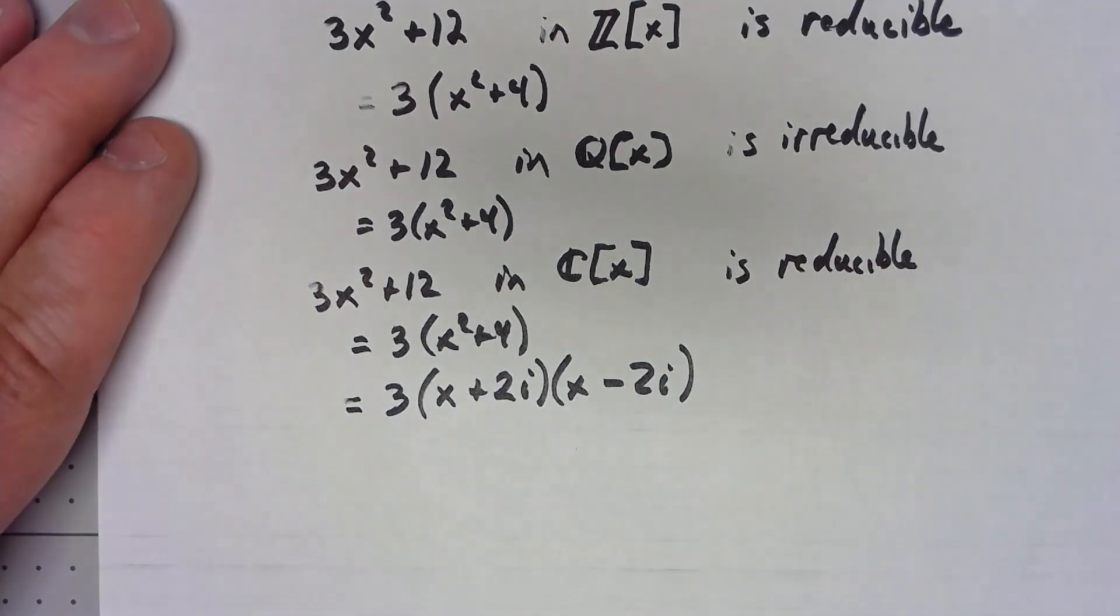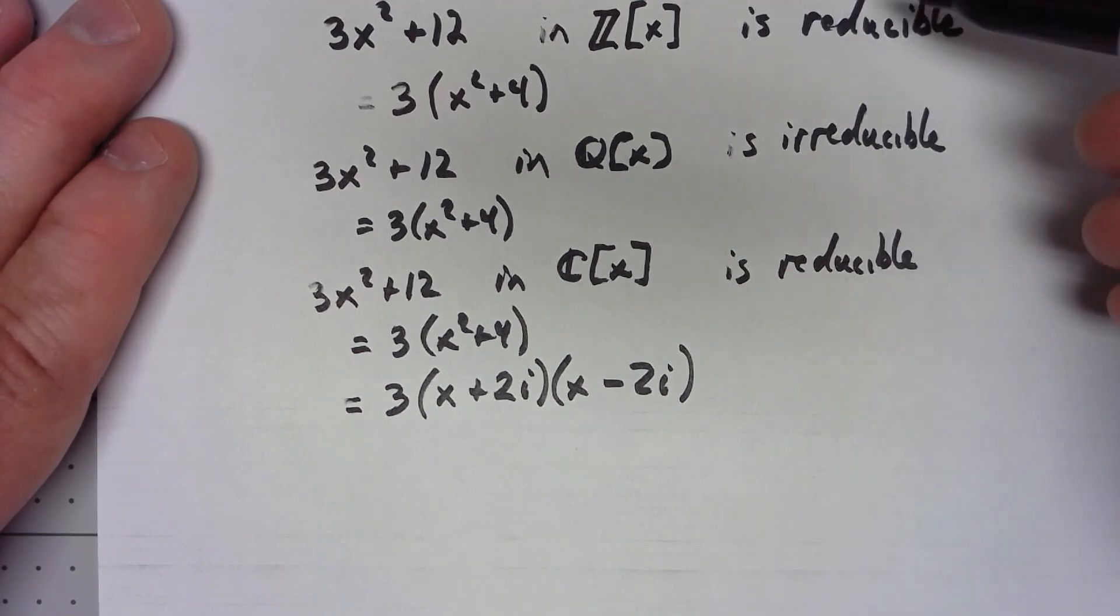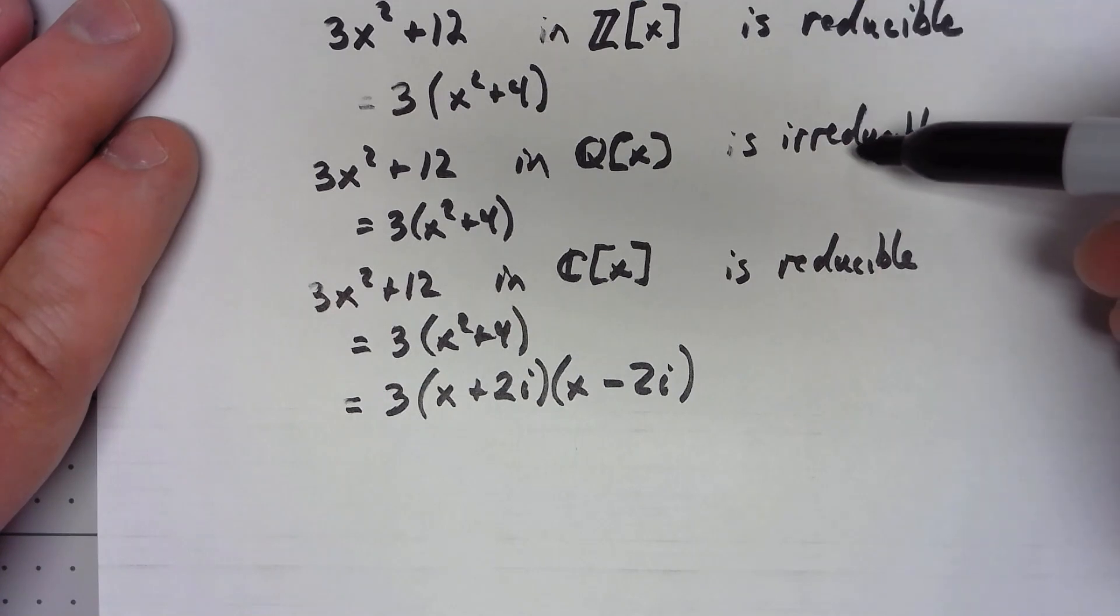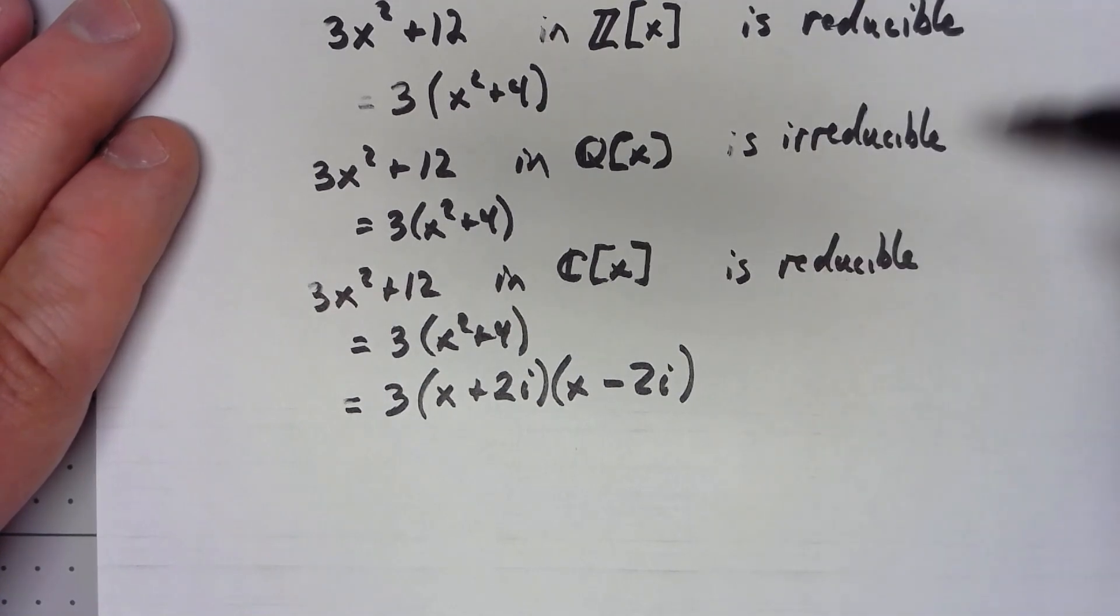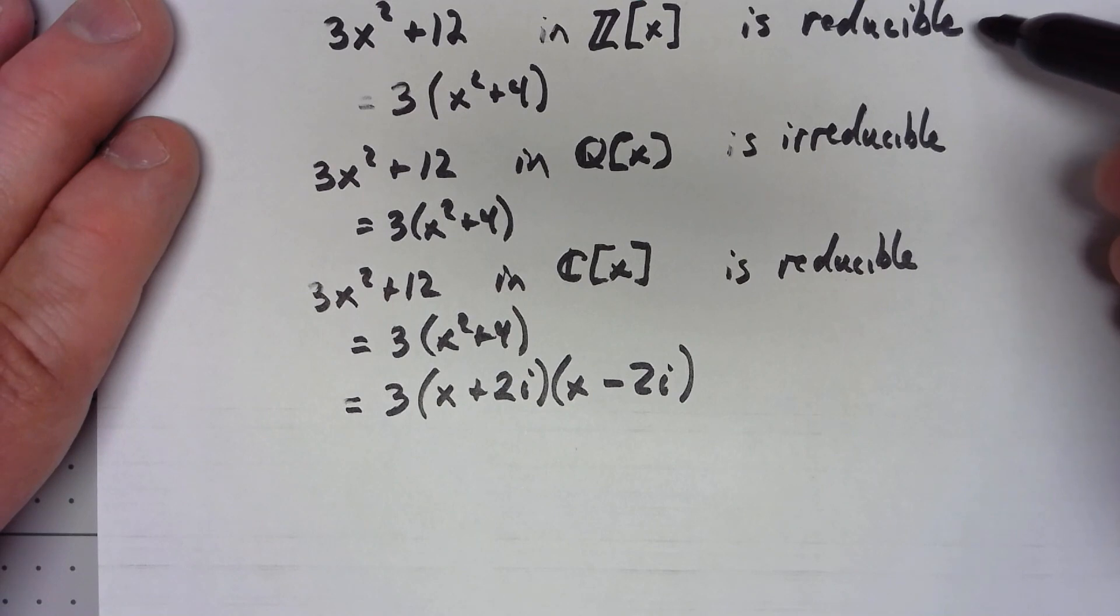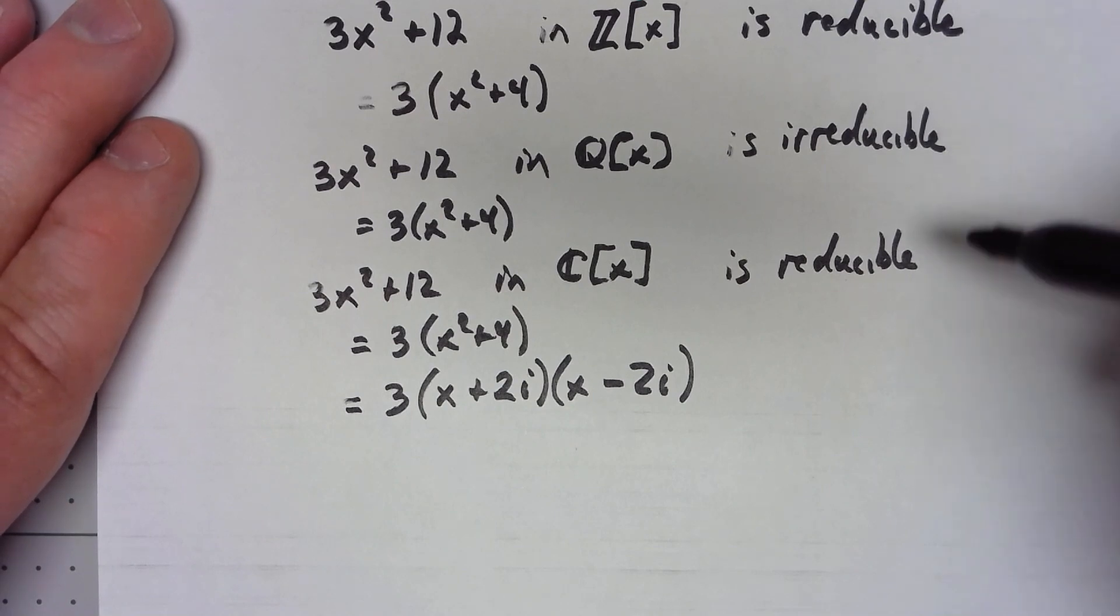Again, what the integral domain is that you're working over is incredibly important. Even though Z is included in Q, Q is included in C, we get this weird thing where it's reducible in Z[x] irreducible in Q[x] and reducible again in C[x]. It all depends on what the integral domain we're working with is.